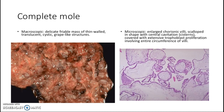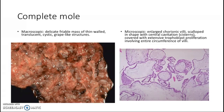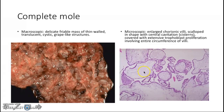This is how a complete mole looks like. Grossly, it looks like a grape-like structure — friable, thin-walled, translucent, and cystic. Microscopically, we'll see enlarged chorionic villi with scalloping at the edges, central cavitation — a central cavity within it, also called cisterns — and it's covered by extensive trophoblastic proliferation involving the entire circumference of the villi.